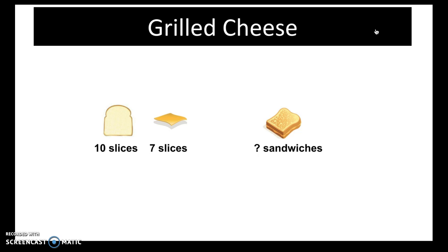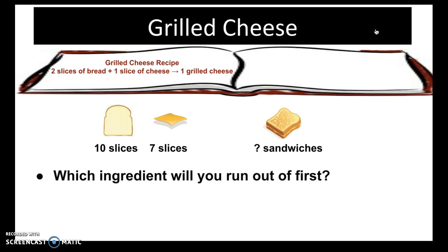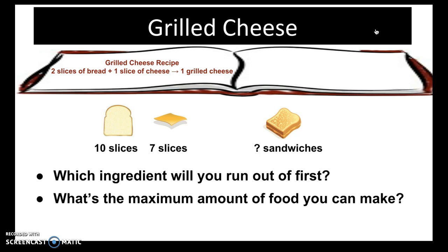Every time a chemist goes into the lab to make something, they need to consider: what's the balanced equation — what's my recipe? Which reactant will run out of first — what's my limiting reagent? And what's the maximum amount of product I can make? We introduce this concept using the grilled cheese analogy. Let's say your friends call and say they're coming over hungry. You check your fridge and find 10 slices of bread and 7 slices of cheese. Your recipe is 2 slices of bread plus 1 slice of cheese makes 1 grilled cheese sandwich. The question is how many sandwiches you can make, which ingredient runs out first, and what's the maximum number of sandwiches.